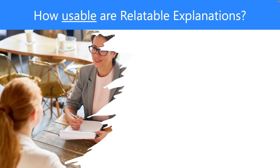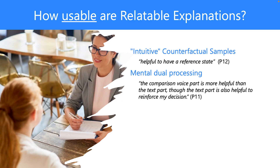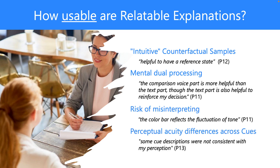To answer how usable relatable explanations are, we conducted an interview in a think-aloud protocol with 14 participants recruited from a university mailing list. Results indicate that users considered counterfactual samples more intuitive than others, and users made their decision based on mental dual processing when vocal cues came in. We also observed a risk of misinterpreting saliency bars as too technical for users, and identified differences in perceptual acuity of cues between users and the system.